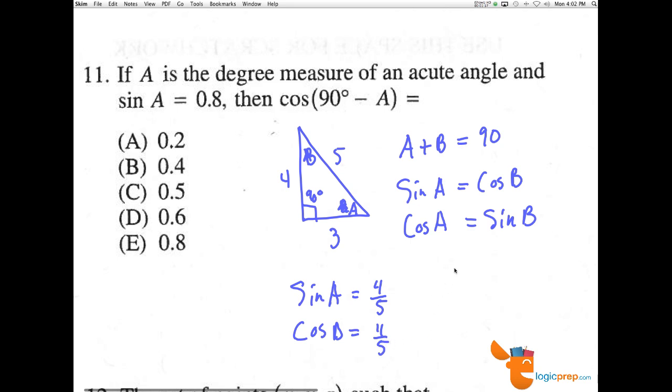Now, if A plus B equals 90, we can say that we have B, or we have angle A, rather, and then B would be the same as 90 minus A. So, the sine of A has to equal the cosine of B, or 90 minus A, which is the same thing.